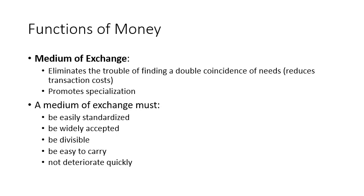There are some conditions that a medium of exchange must satisfy. First, it must be easily standardized. Consider if people used stones as money — we cannot easily standardize stones because they differ in size, color, brightness, and so on. But with paper money, each 20-pound note looks like every other 20-pound note, each 50-pound note looks like every other 50-pound note, and so on. Second, it must be widely accepted.